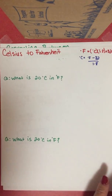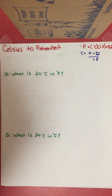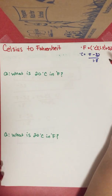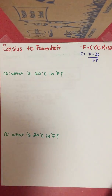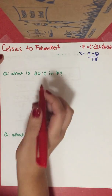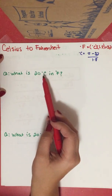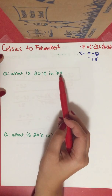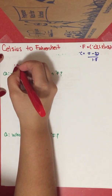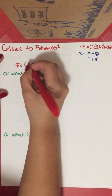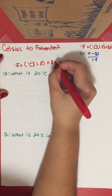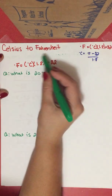We're going to start off with Celsius to Fahrenheit. I like putting the equations up here — it helps keep me in check in case I forget something, so I put both of them. The question reads: what is 20 degrees Celsius in Fahrenheit? Since we're looking for Fahrenheit, degrees Fahrenheit equals degrees Celsius times 1.8 plus 32.